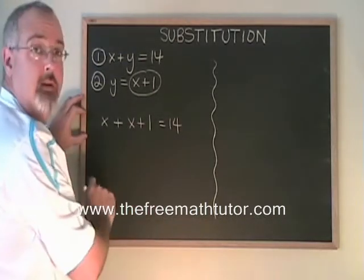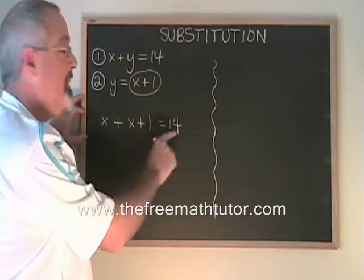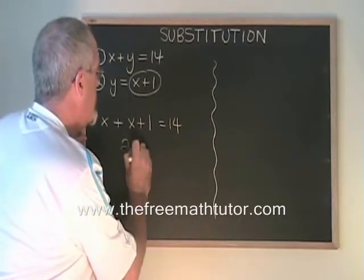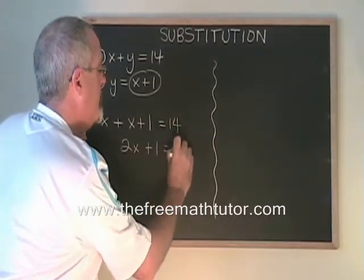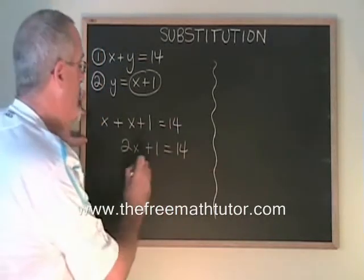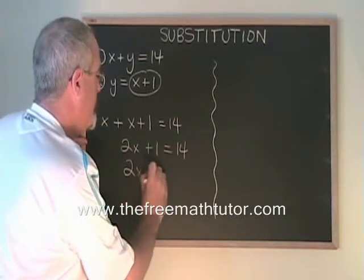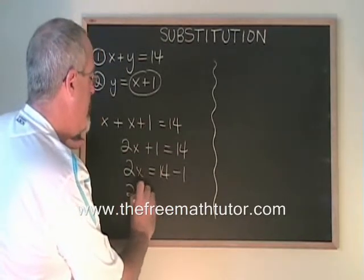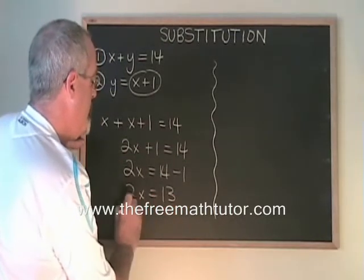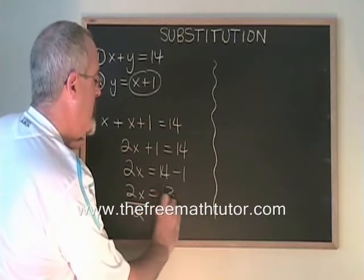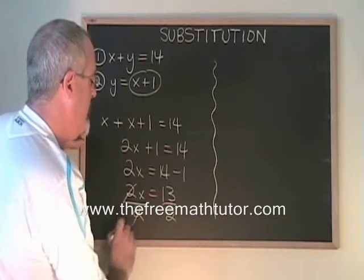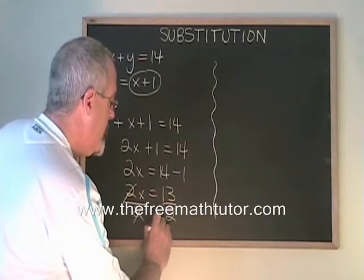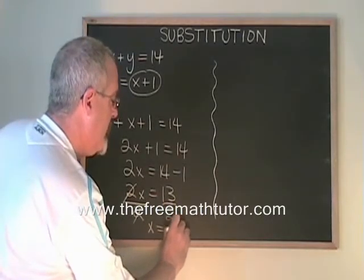Now we simplify. We have an equation with only x's, and we can solve that. x plus x is 2x. Now let's move the 1 to the other side. 14 minus 1 is 13. If we divide both sides by 2, we have isolated our x, and we see x is equal to 13 halves, or x is equal to 6.5.